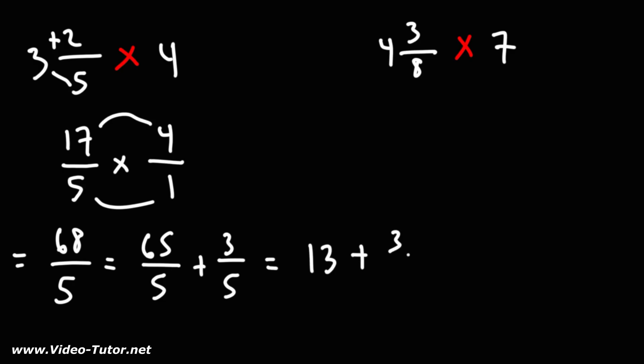So we have 13 plus 3 fifths. And we can write that as a mixed number, 13 and 3 fifths. So that's the answer. 3 and 2 fifths times 4 is 13 and 3 fifths.